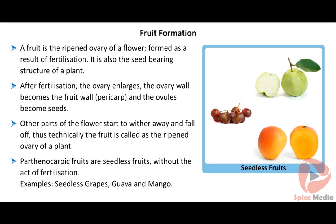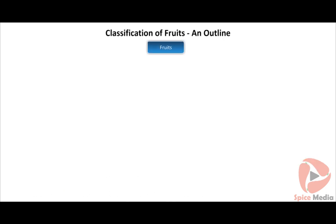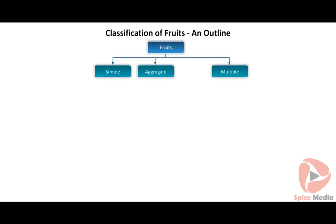Parthenocarpic fruits are seedless fruits formed without the act of fertilization. Examples include seedless grapes, guava, and mango. Fruits are classified as simple, aggregate, and multiple fruits.